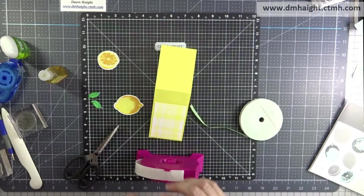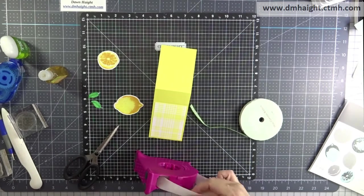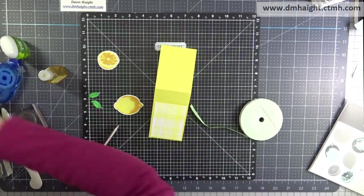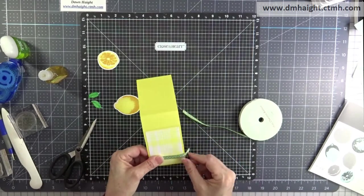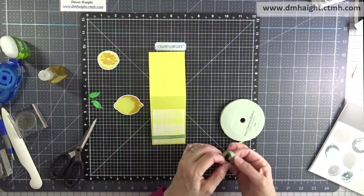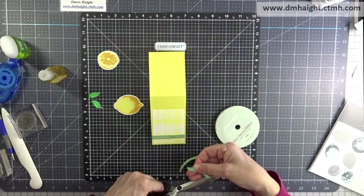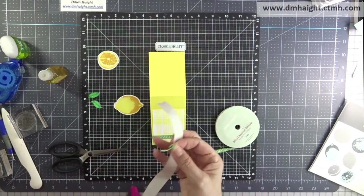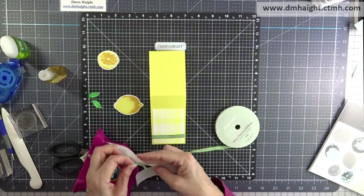This ribbon, it's topiary chevron ribbon and it's also retired, but you can use whatever you have on hand. Check your stash and see what kind of ribbon you have. I'm just going to put some of that at the base and then I'll just tie a knot and add that with some glue dots. Easy way to add ribbon.